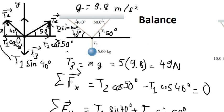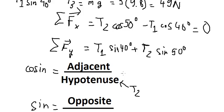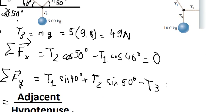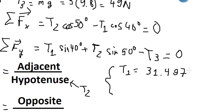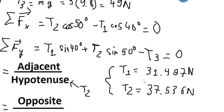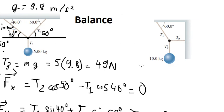T3 is opposite this upward vector, so we subtract T3. Because this is balance, the equation equals zero. Putting this into the calculator, we find T1 is approximately 31.497 newtons and T2 is approximately 37.536 newtons. That is the technique to find T1 and T2.